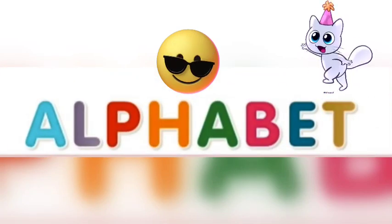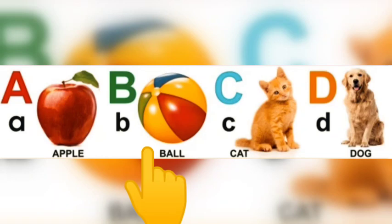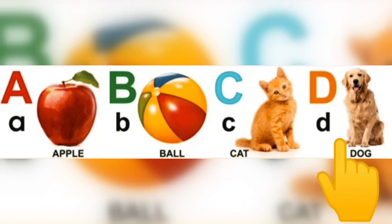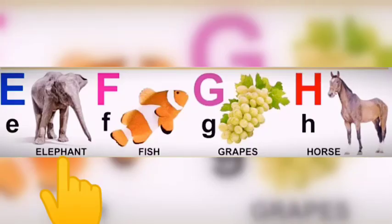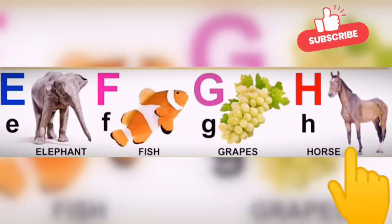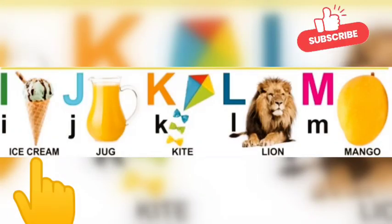Let's study the English alphabets. E for elephant, F for fish, G for grapes, H for horse, I for ice cream.